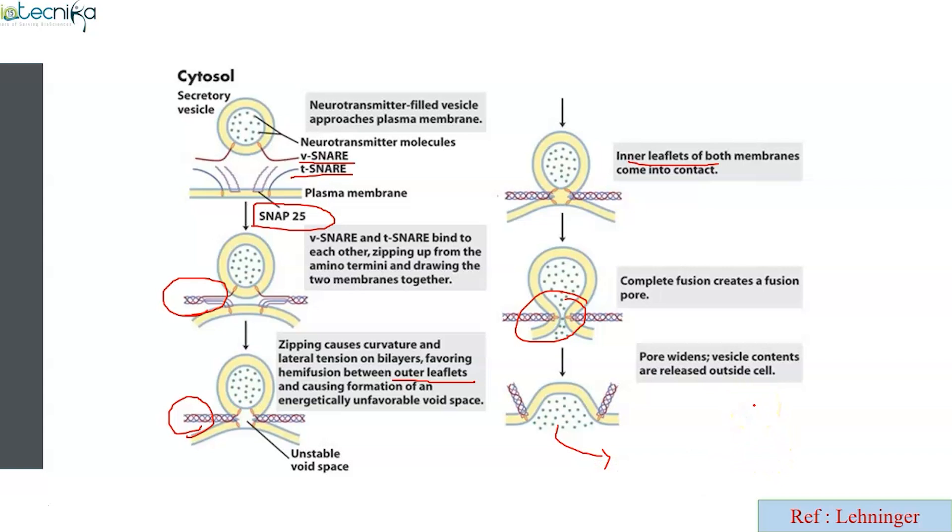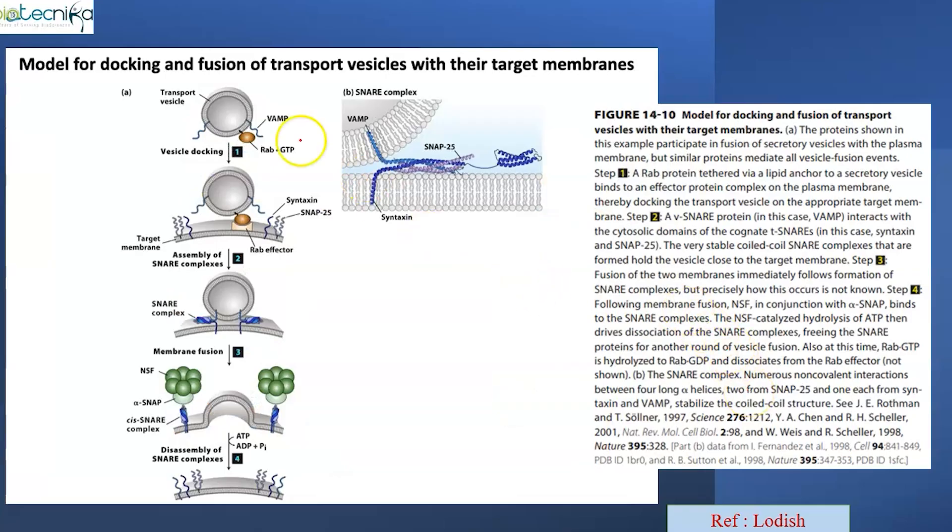You may expect questions directly based on v-SNARE, t-SNARE fusion, the sequence of events, or by the examples of these proteins. For example, if you look into this image, VAMP belongs to v-SNARE protein, whereas syntaxin and SNAP-25 belong to t-SNARE. They are having two polypeptides, this is one polypeptide, this is one polypeptide. Altogether we get a four-helix structure.